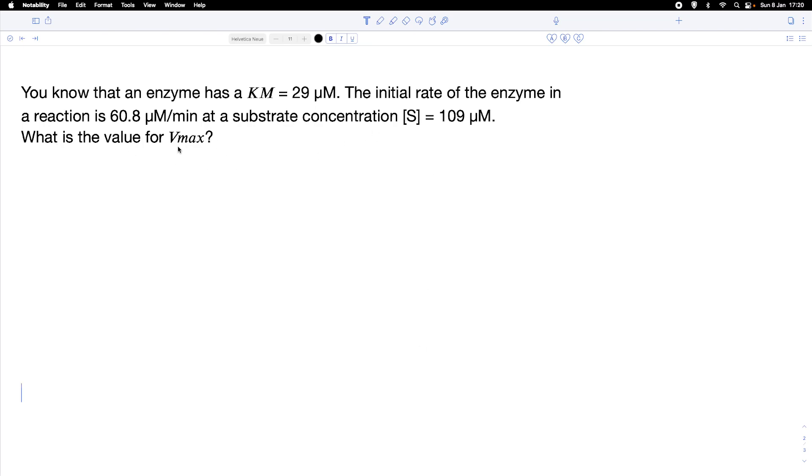We want to find the value for Vmax. We have been given an enzyme with a Km of 29 micromolar, and the initial rate of this reaction is 60.8 micromolar per minute at a substrate concentration of 109 micromolar.